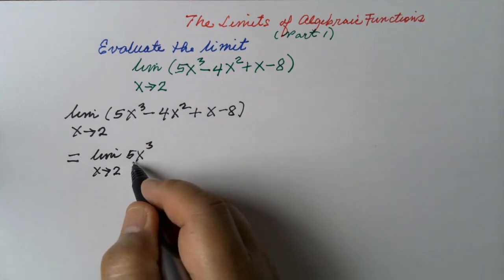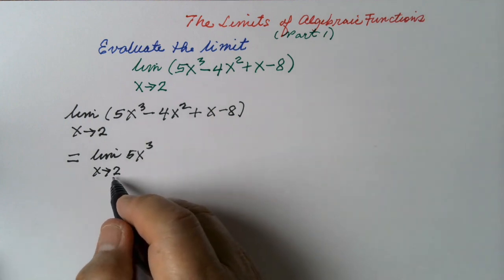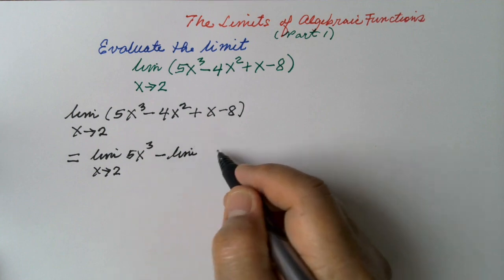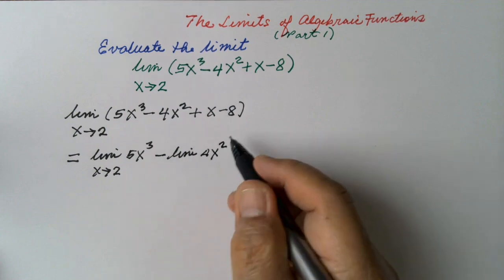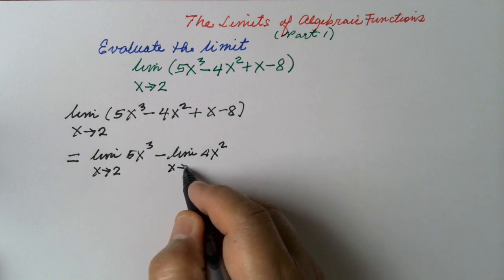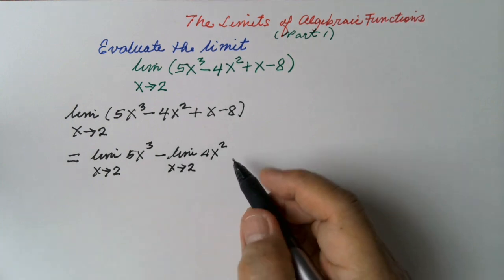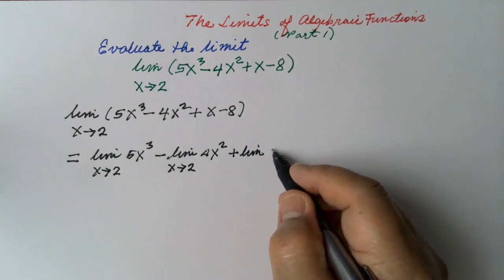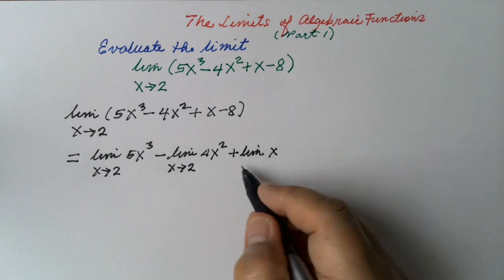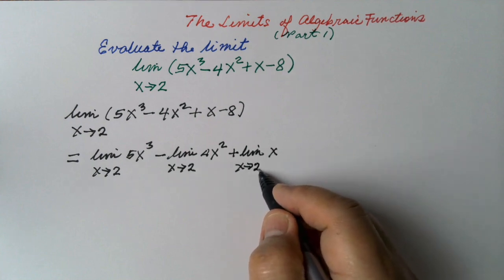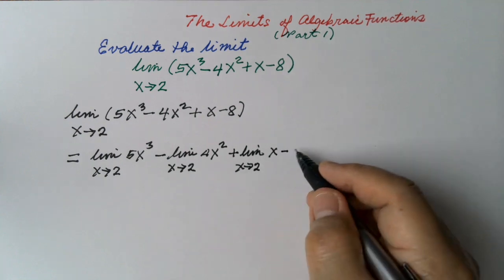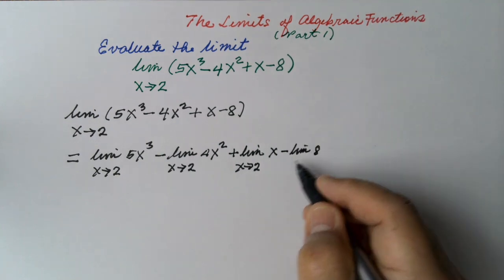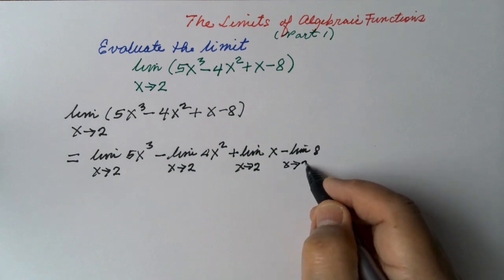The limit of 5x cubed as x approaches 2, minus the limit of 4x squared as x approaches 2, plus the limit of x as x approaches 2, minus the limit of 8 as x approaches 2.